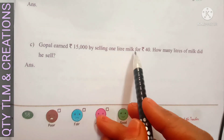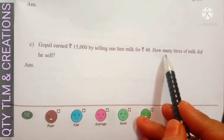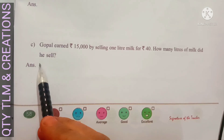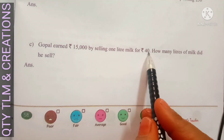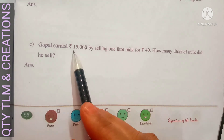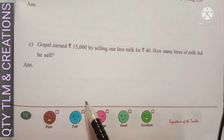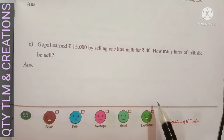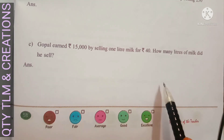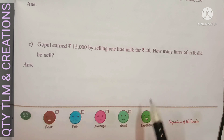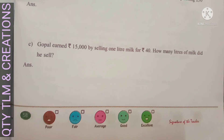(c) Gopal earned 15,000 rupees by selling milk at 40 rupees per liter. How many liters of milk did he sell? Cost of 1 liter equals 40 rupees. Gopal earned 15,000 rupees. Number of liters sold equals 15,000 divided by 40, which equals 375 liters. We will continue other topics in another video. Until then, bye, thank you.